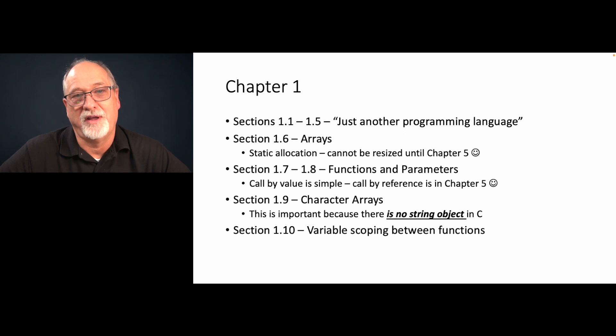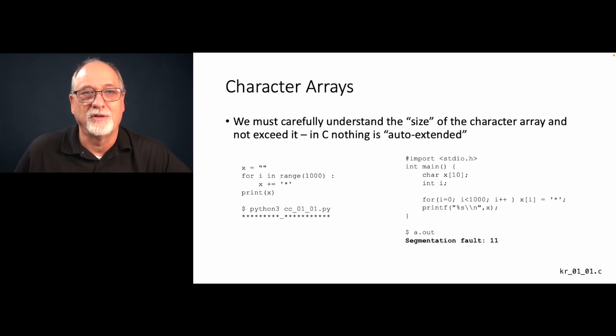Chapter 1.7, 1.8 are functions and parameters and it's all call by value in this early phase. Call by reference is in chapter five because we need to know about pointers. Section 1.9 is character arrays. Read this one closely because there is no string object in C, there's no objects at all. Section 1.10 talks about variable scoping between functions, which feels similar to other languages, partly because those languages took their inspiration from C.